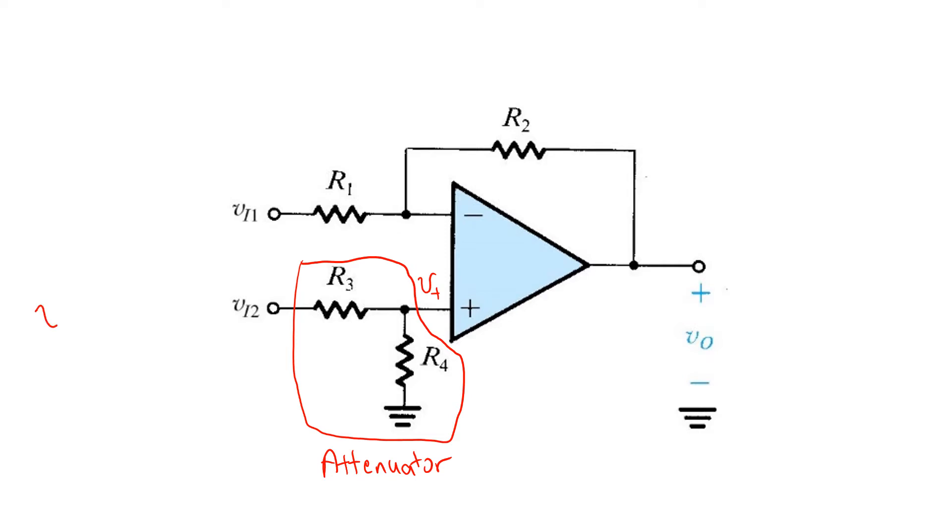Now, we can straightforwardly write V+, as a function of VI2. It's just the voltage divider R4 over R3 plus R4. From the preceding analysis, we know that VO is negative R2 over R1 times VI1 plus 1 plus R2 over R1 times the voltage of the positive op-amp terminal, V+.